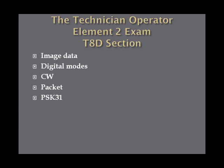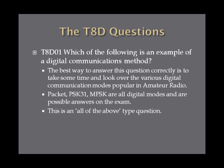The T8D section of questions deals with image data, digital modes, CW, packet, and PSK31. The first question asks which of the following is an example of a digital communications method. The best way to answer this is to look over the various digital communication modes popular in amateur radio. The possible answers include packet, PSK31, and MFSK, which are all digital modes, making this an all-of-the-above question.